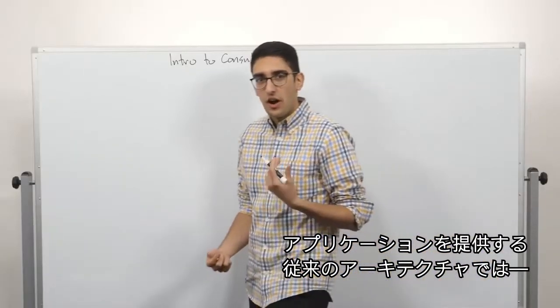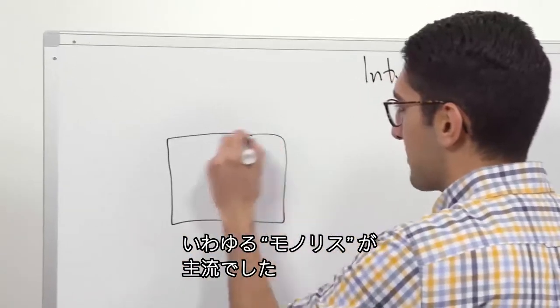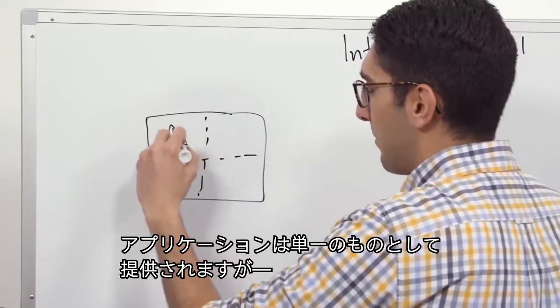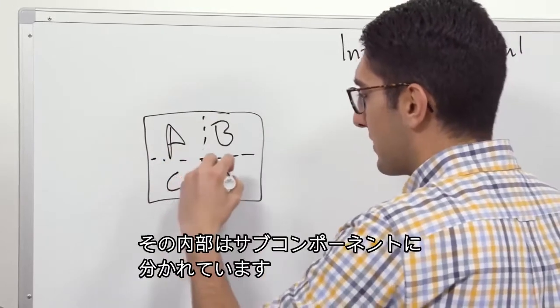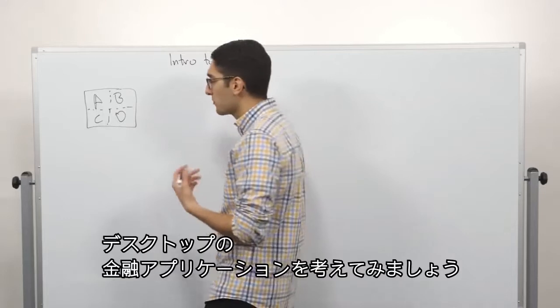When we look at traditional architectures for delivering an application, what we have is the classic monolith. When we talk about the monolith, it's a single application that we're deploying, but typically has multiple discrete sub-components. So as an example,